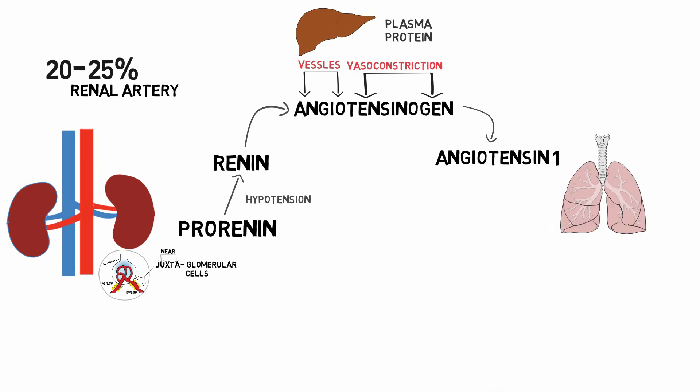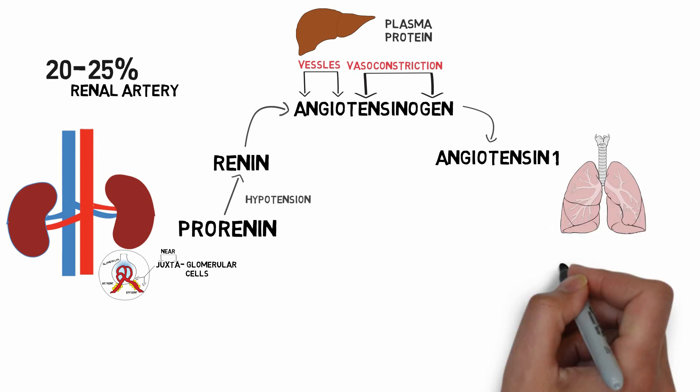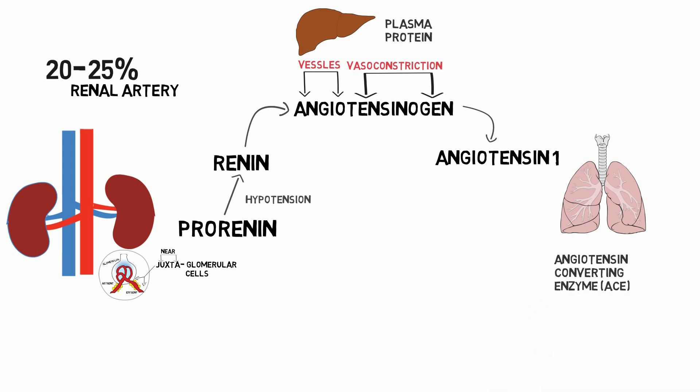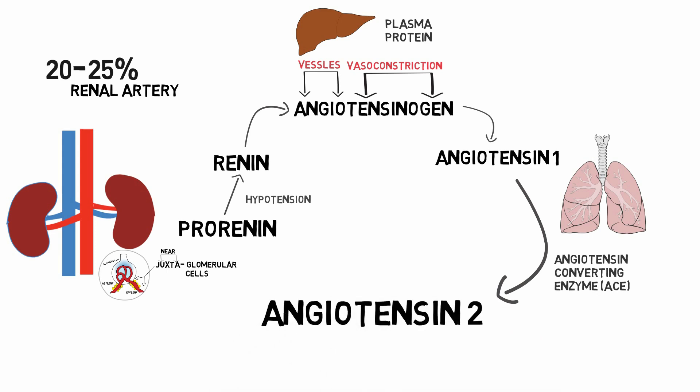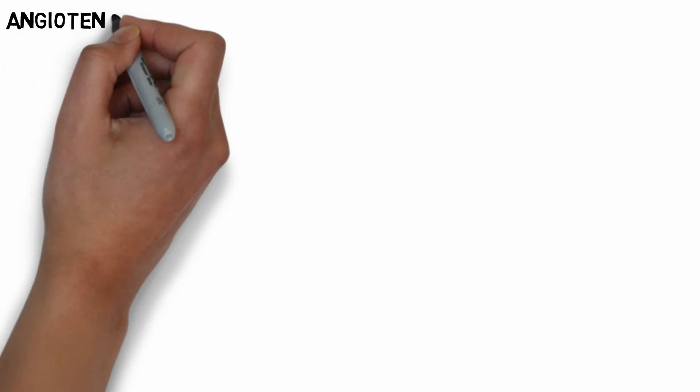Renin converts angiotensinogen into angiotensin 1. The next step takes place in the lungs, when the enzyme angiotensin converting enzyme acts on angiotensin 1 and converts it into angiotensin 2. Angiotensin 2 is a powerful vasoconstrictor which mediates the effects of the renin angiotensin aldosterone system. Let's look at the effects of angiotensin 2 on blood vessels.